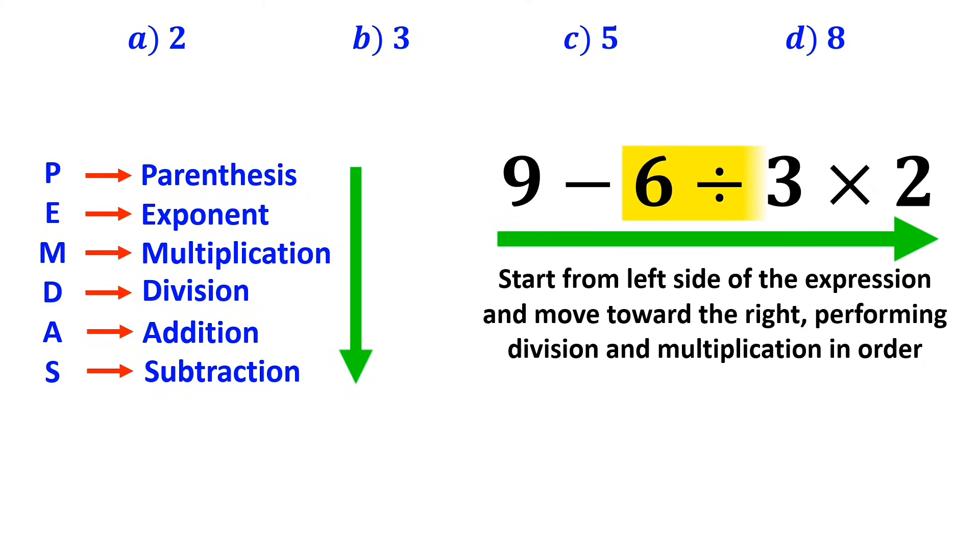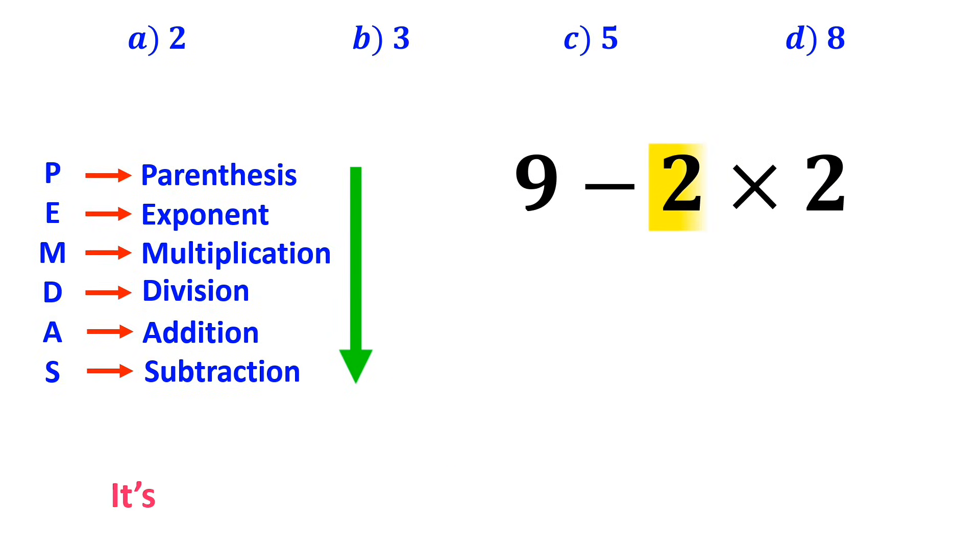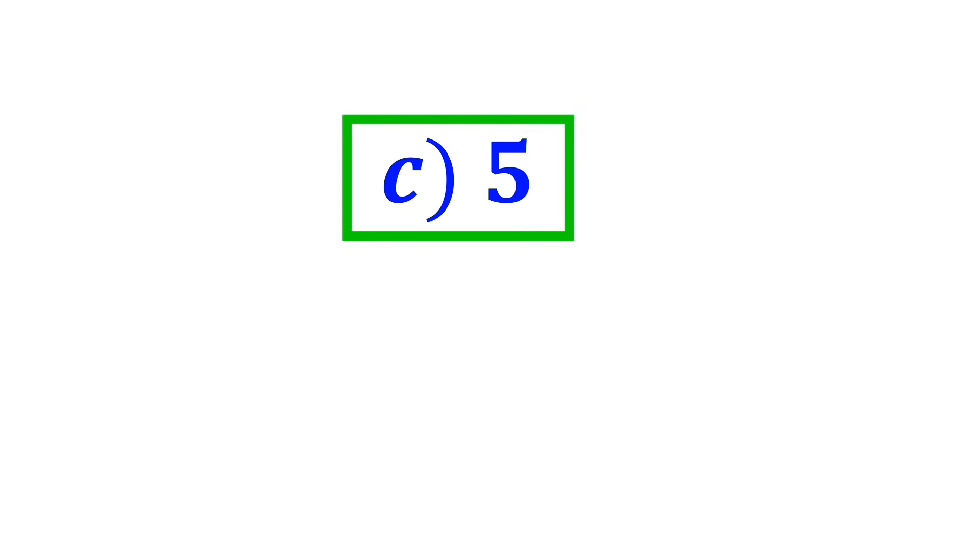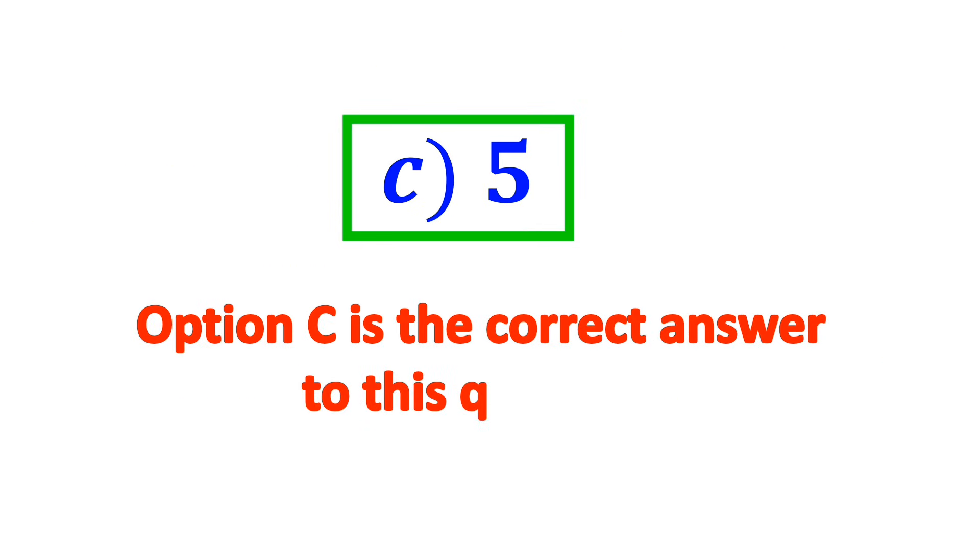So, first we perform the division between 6 and 3. And this expression simplifies to 9 minus 2 times 2. Now it's time to do the multiplication between the twos, which gives us 9 minus 4. And finally, the value of this expression is equal to 5. Therefore, option C is the correct answer to this question.